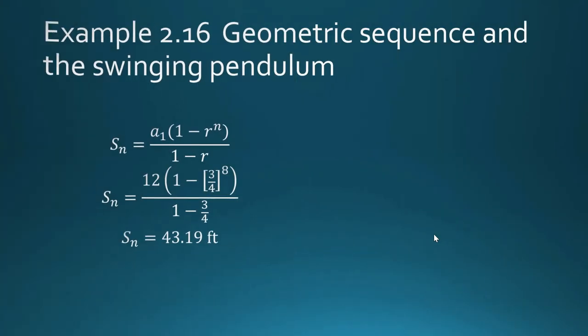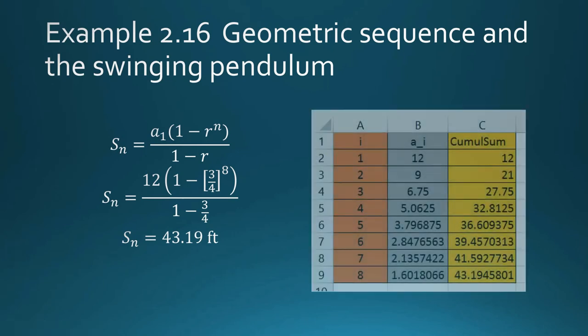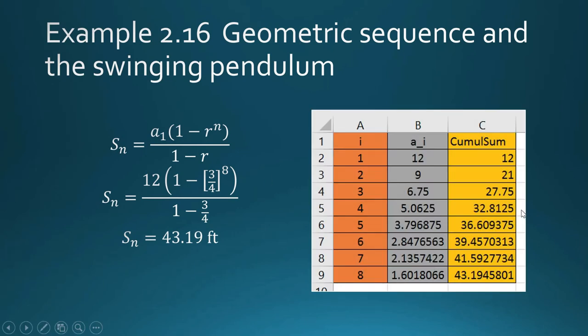So the accumulated distance or the total distance covered by the pendulum after the 8th swing is 43.19 feet. And you know what? I opened an Excel just to verify if we did it correctly. Actually, this is the index. This one is the ith term. This is the first term, the second, the third, so on and so forth. This is the eighth. And in fact, this is what we got from our computation, 1.6 feet. So this is a descending geometric sequence.